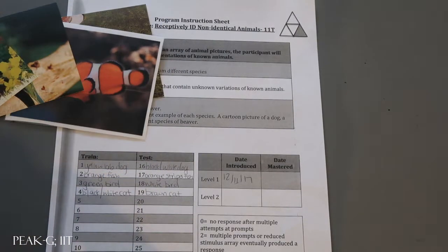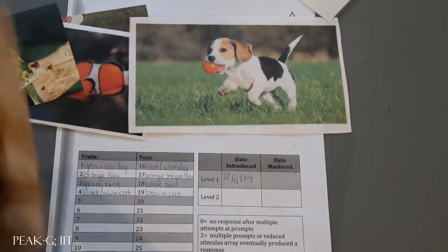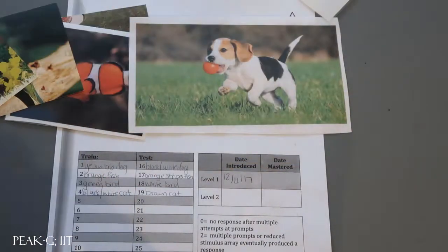And then for test stimuli, we have a black and white dog, a different fish, a brown cat, and a white bird.